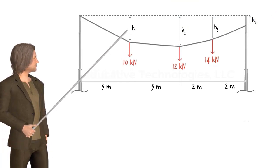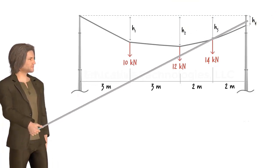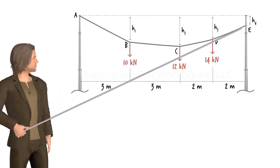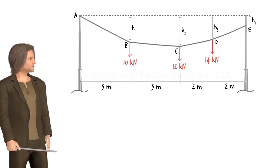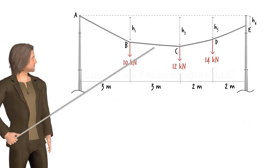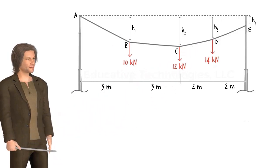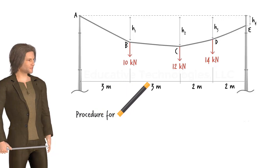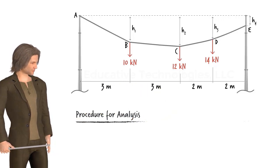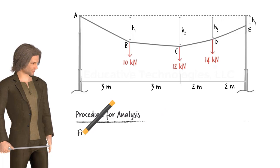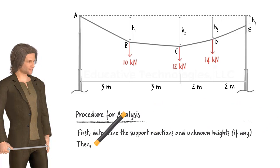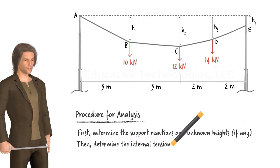Let's label them H1 through H4. The analysis of such a cable requires calculation of the reaction forces at A and E, the tension force in each segment of the cable, and the unknown heights if there are any. A general approach for analyzing this cable, or any cable system subjected to a series of concentrated loads, is to determine the reaction forces and unknown heights before determining the tension forces in the cable.